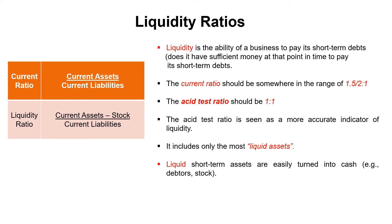The acid test benchmark is 1:1. It's seen as a more reliable indicator of your liquidity position purely because it focuses on the most liquid assets — those which are easy to turn into cash in the short term. Stock is taken out of the calculation because if you have an invoice to pay urgently, you can't quickly sell stock at full value. Whereas if you contact your debtors and offer a 5% discount, you're more likely to turn that debt into cash on the day.